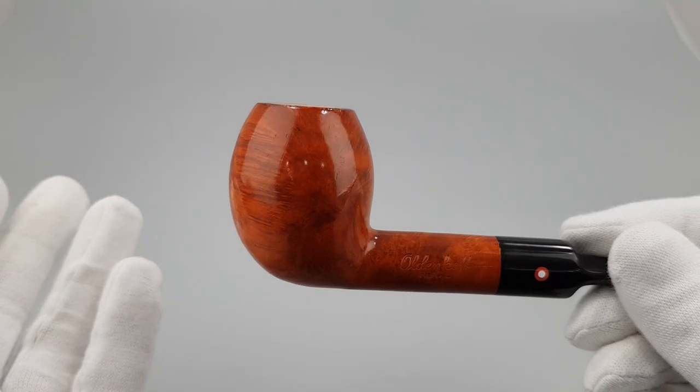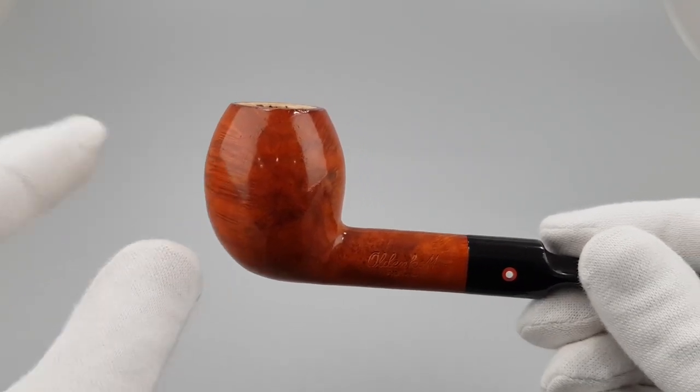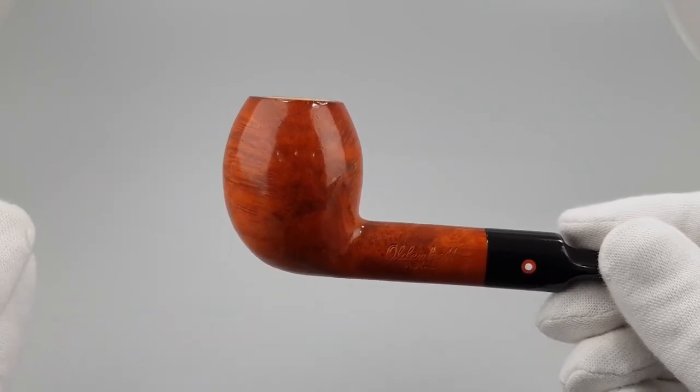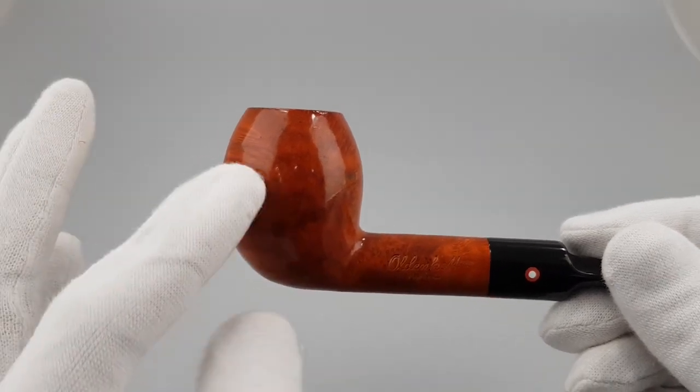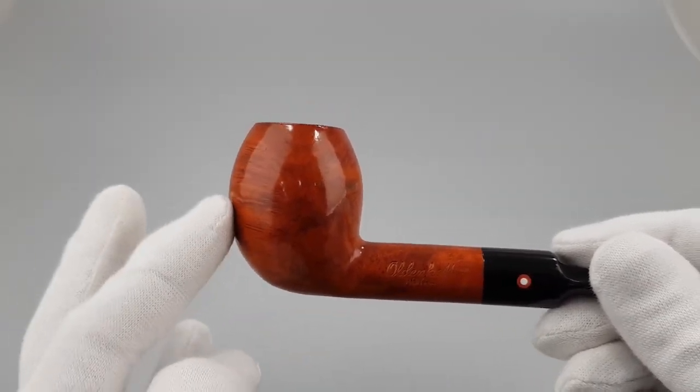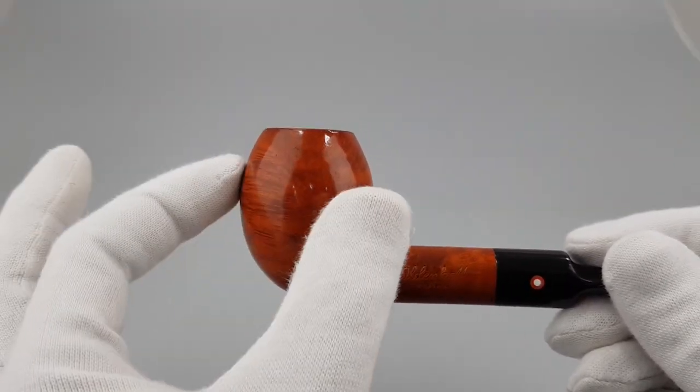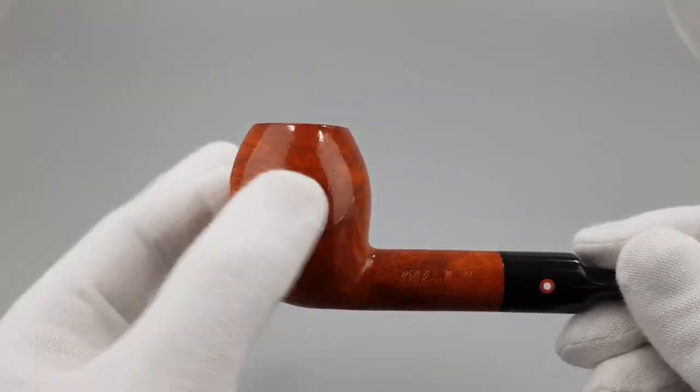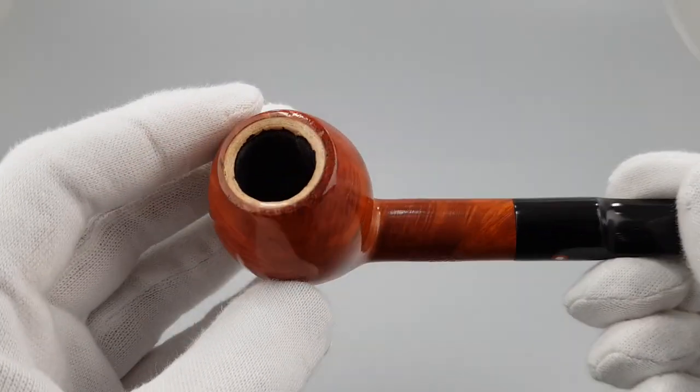Something like a bulldog, something between a bulldog and an apple because it's rounded but it has that transition. If the angle was stronger, it would actually look like a bulldog.